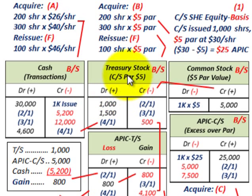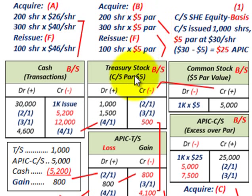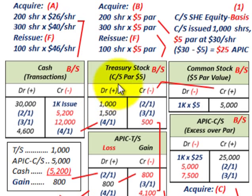This is where the difference comes in. With the par value method, we debit or increase our treasury stock by — looking at date 2-1 — the 200 shares we acquired at the $5 par value. This is where the common stock comes into play: we use the par value of our common stock to record the par amount of our treasury stock. So with 200 shares at $5 par, we debit our treasury stock for $1,000.